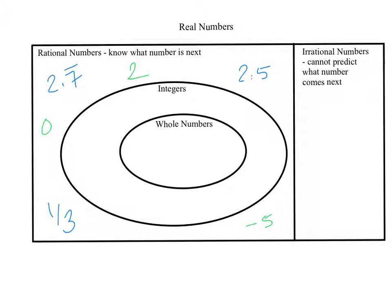Before I do that, I want to talk about irrational numbers. Irrational numbers are numbers where you cannot predict what number comes next. An example would be pi. Pi is irrational — 3.14159265358979323... That's as far as I've memorized. What number comes after that last 3? We could look it up, but ultimately pi goes on forever. It doesn't have a pattern, it doesn't repeat. That means it's irrational. So pi is irrational.